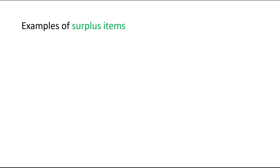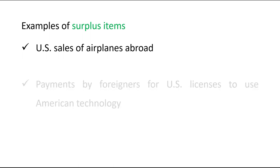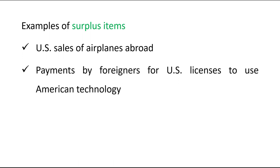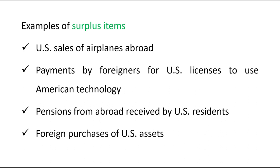Examples of surplus items include: US sales of airplanes abroad, payment by foreigners for US licenses to use American technology, pensions from abroad, and foreign purchases of US assets. All these items give rise to a receipt, and that is why these are examples of surplus items.